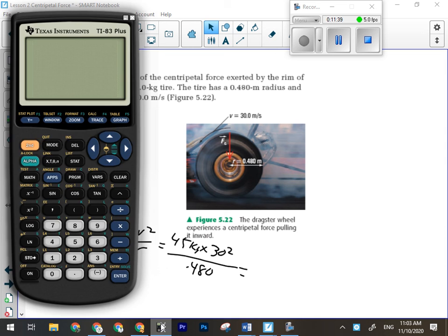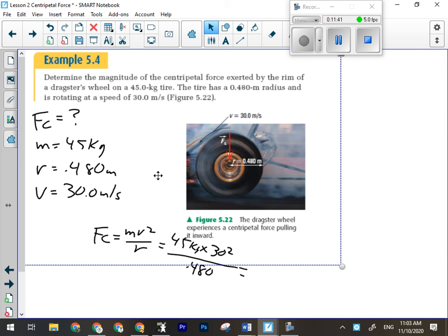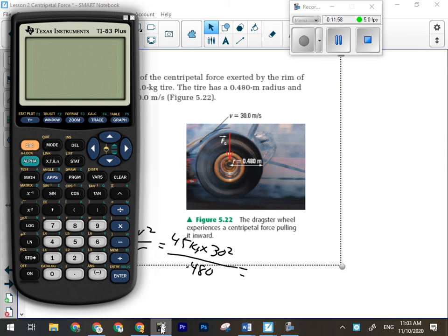This is something you do have to watch for, incidentally. Make sure that they're giving you radius. Because if they give you diameter, which sometimes they do, you have to change it to radius. It's something you have to watch for. It catches people often. Because we just assume we're going to be given radius, because that's what we need. So we got 45 kilogram tire. So we're looking at 84,375 newtons worth of force to keep this tire on the rim. That's a lot.